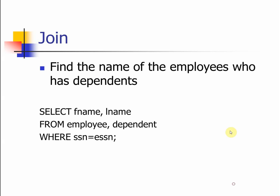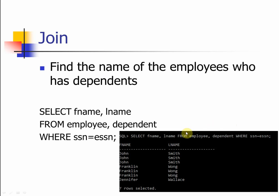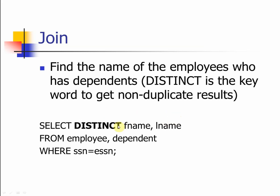You may have a question: there seem to be some duplications, and by definition of the database these should not happen. The answer is that in the database idea you should not have two tuples with exactly the same information, but Oracle simply tries to output the information you are asking for. If you don't want tuples with duplications, we need to use another reserved word called DISTINCT.